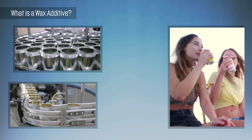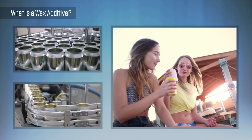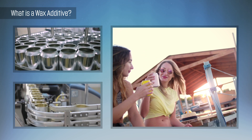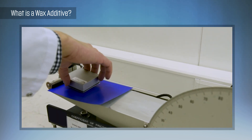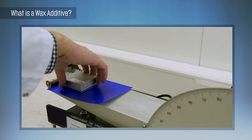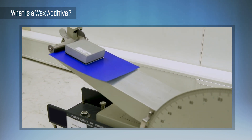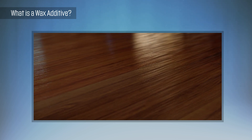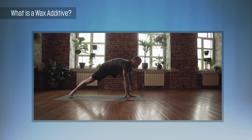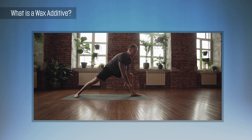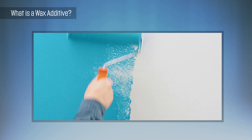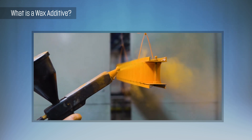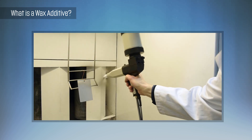Wax additives provide abrasion resistance, which is often desired in coating and ink applications where friction can damage appearance. They impart lubricity to the film in applications where reduced friction is necessary. Wax additives also control gloss or produce a matting effect in applications like wood floor coatings, paints, or high-end printing. They enable textured finishes in applications such as powder-coated appliances.